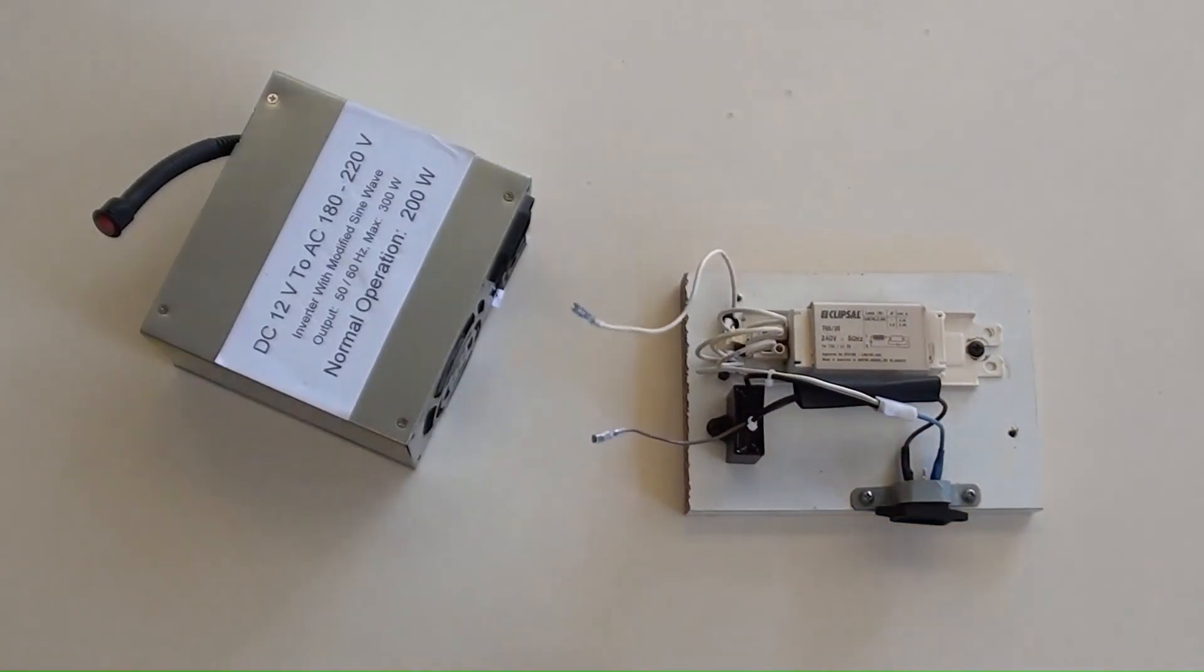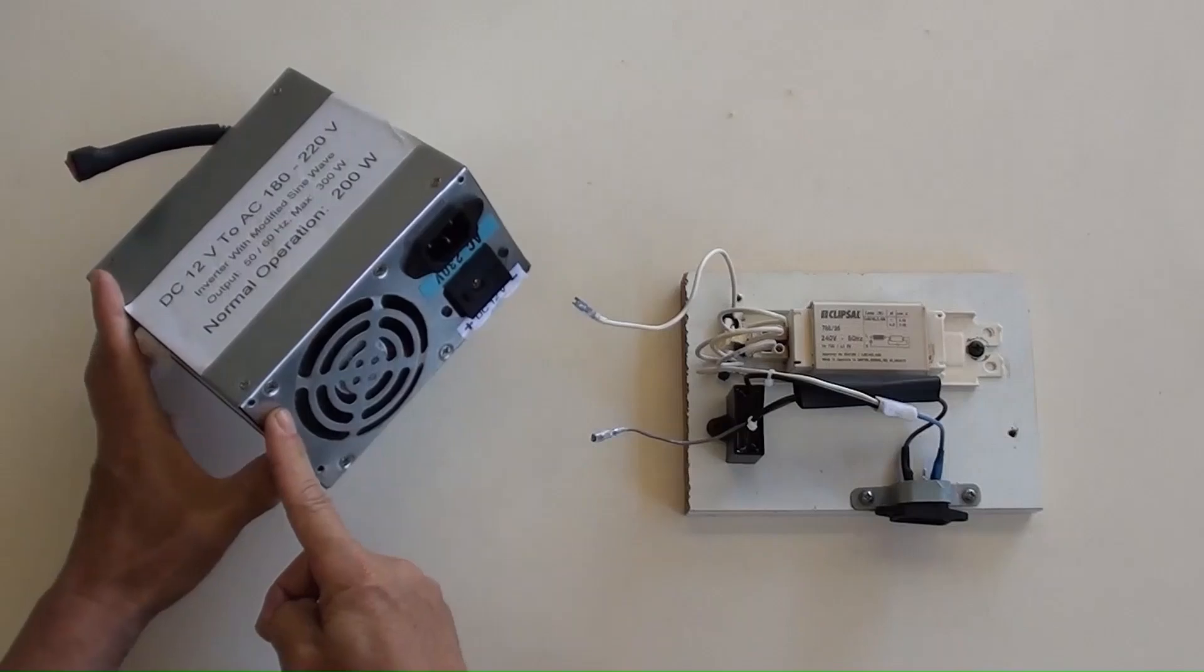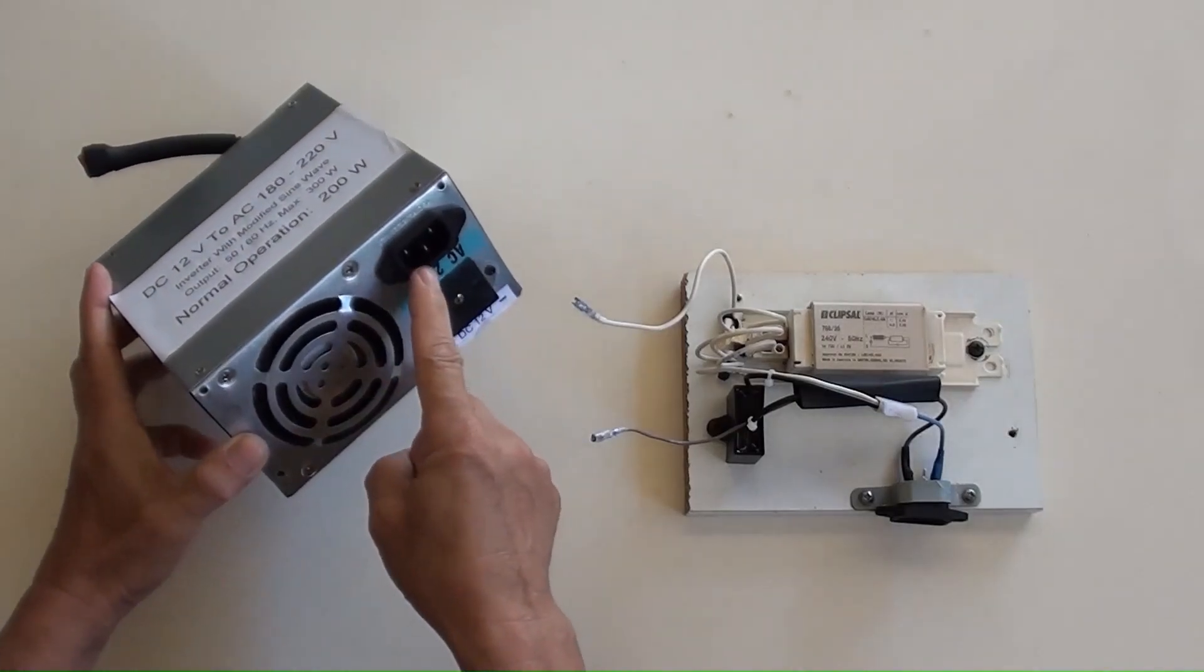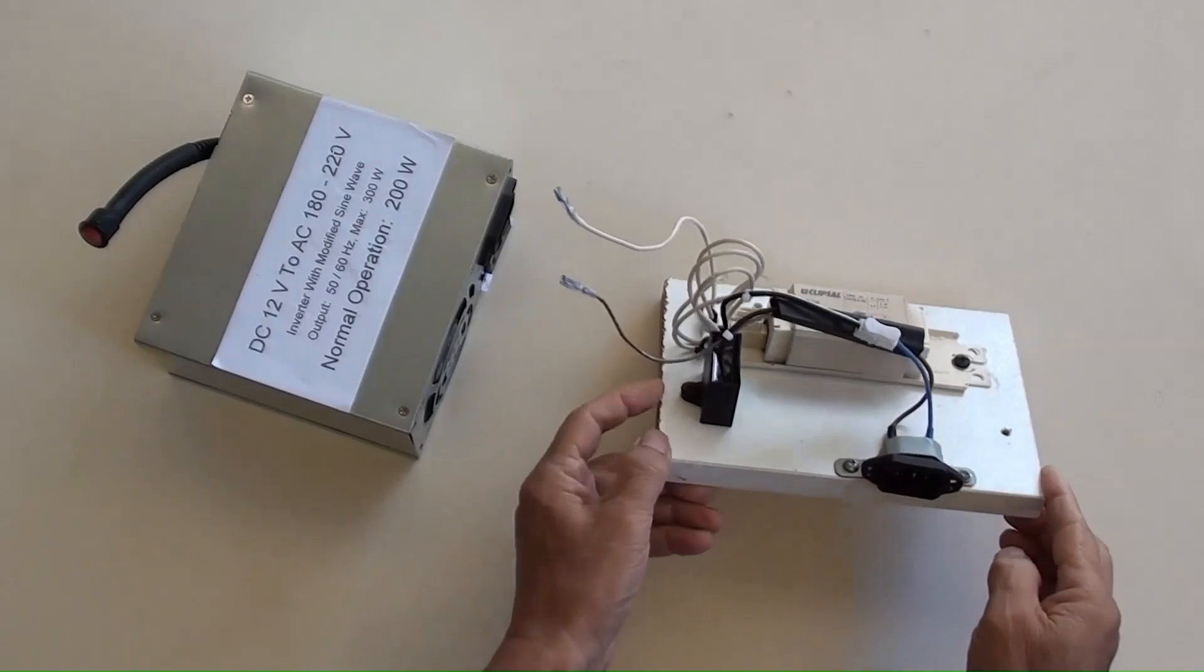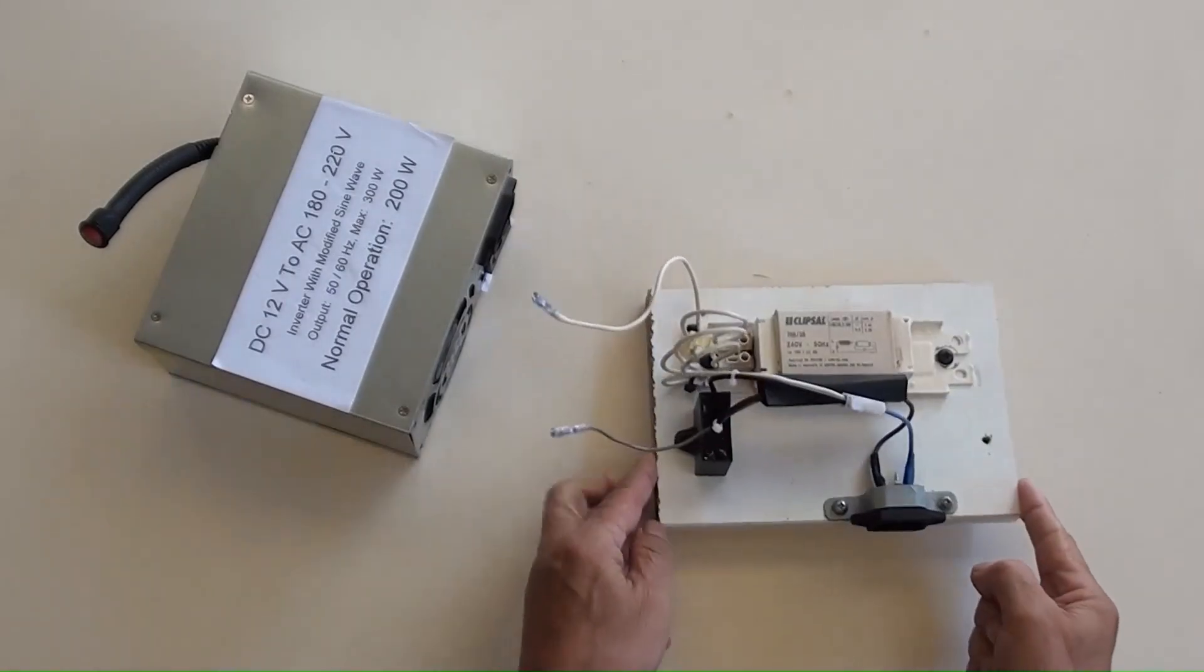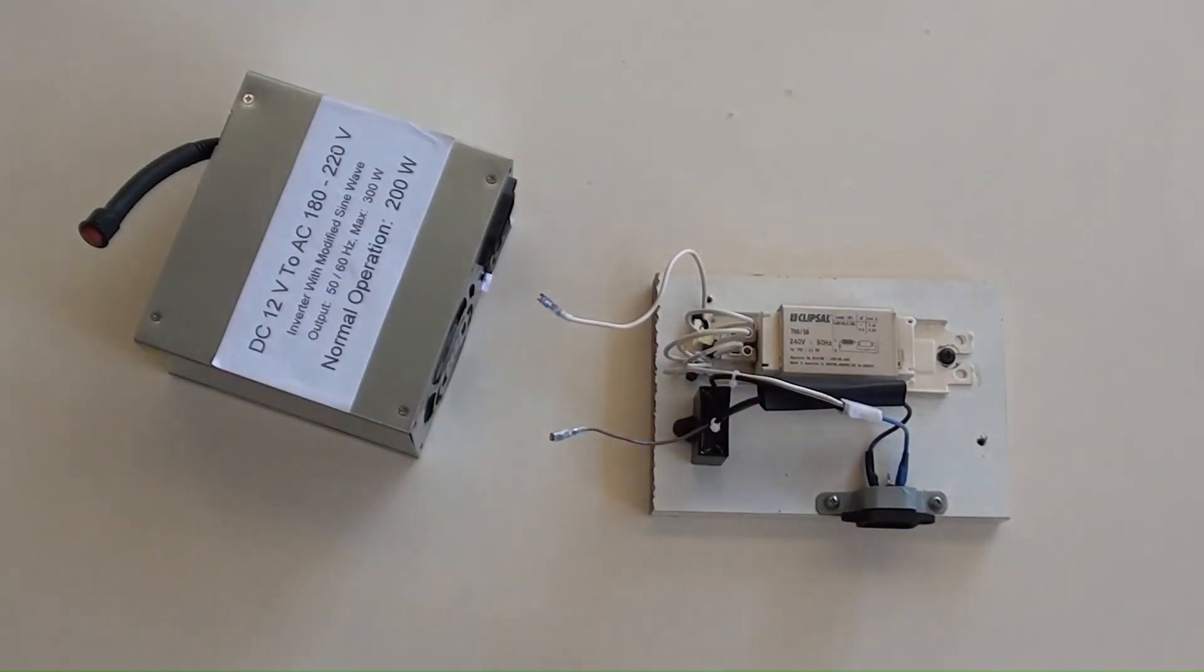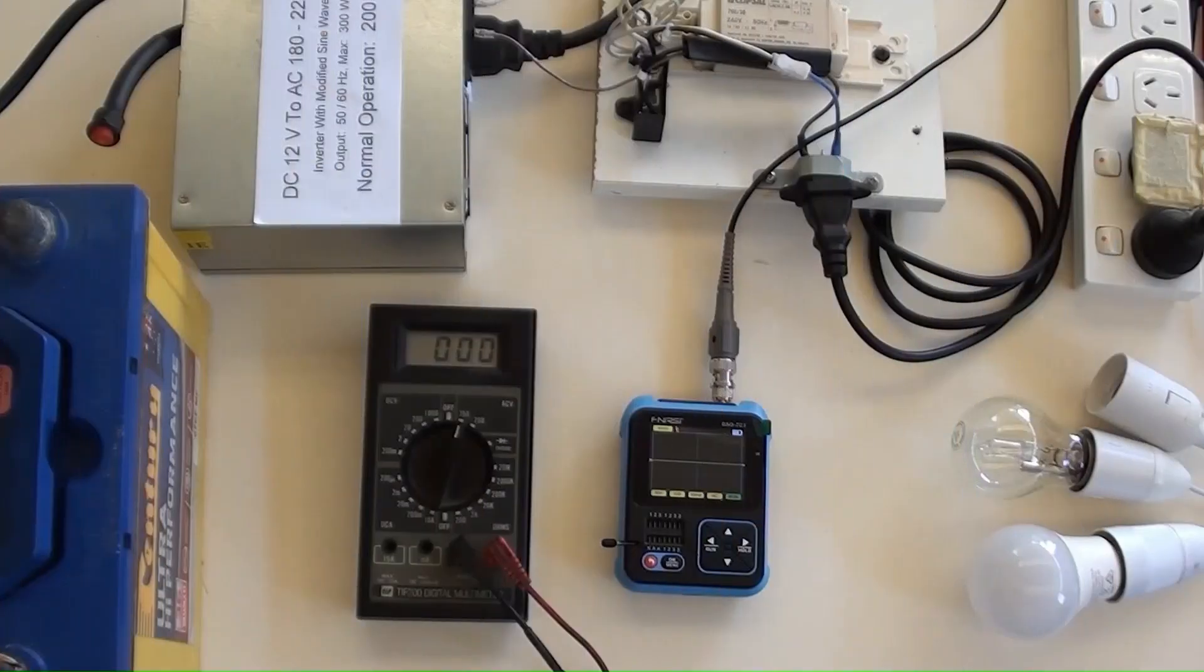Two of these wires will be connected to the inverter's output socket. This 3-pin socket here is for the sine wave output. The load such as bulbs or fan will be connected there. All things here have been set up and connected properly.